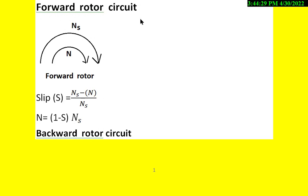For the forward rotor circuit, the slip is given by (Ns minus N) divided by Ns. Here Ns is the stator magnetic field speed rotating in the clockwise direction and its sign is positive. The rotor is also rotating in the clockwise direction, so we put (Ns minus N) divided by Ns. This is the slip for the forward rotor circuit. From this, we can calculate rotor speed N in terms of slip and synchronous speed as (1 minus S) into Ns. So this S is called the forward slip.